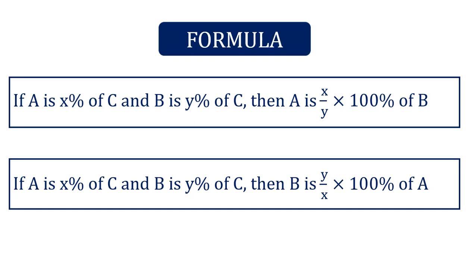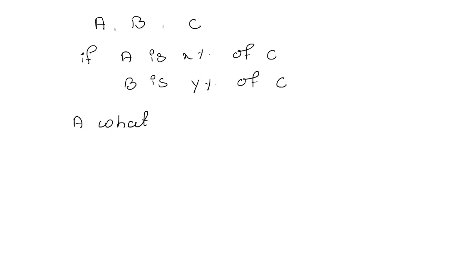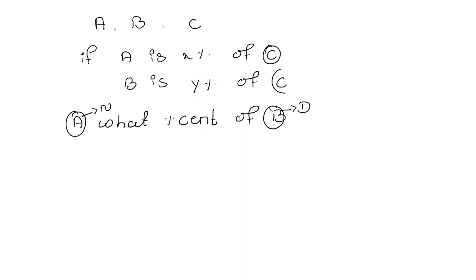Now let me explain these formulas. Consider A, B, C as three numbers — A is the first number, B is the second number, and C is the third number. If A is x percent of C and B is y percent of C, then A is what percent of B? Since A is compared with B, put the value of A in the numerator and the value of B in the denominator, and always consider the value of C equal to 100.